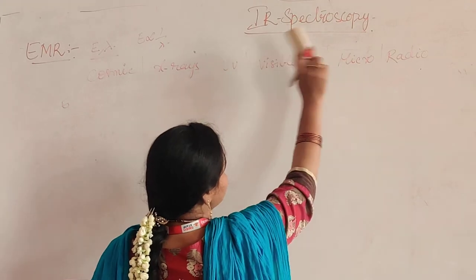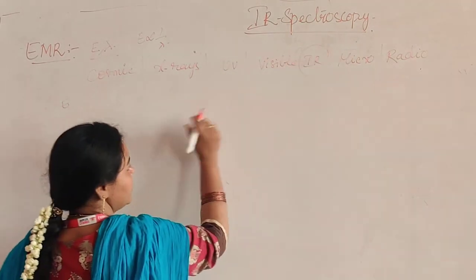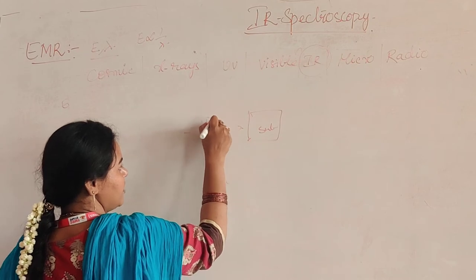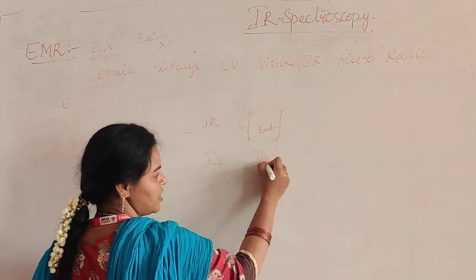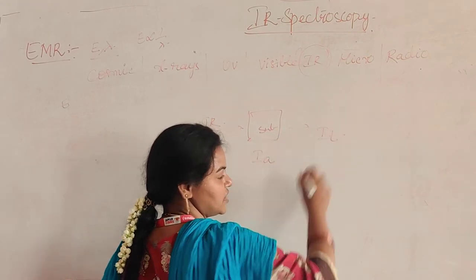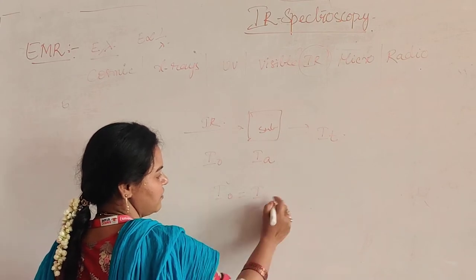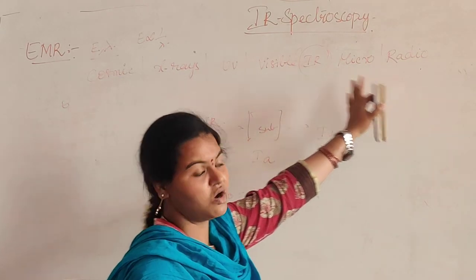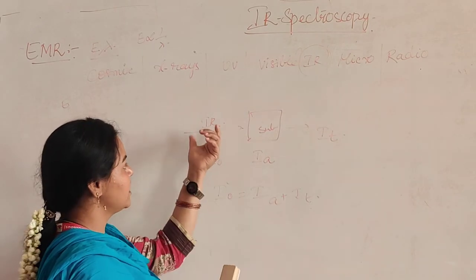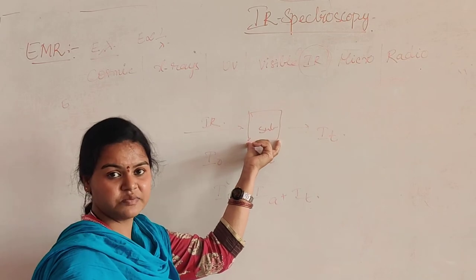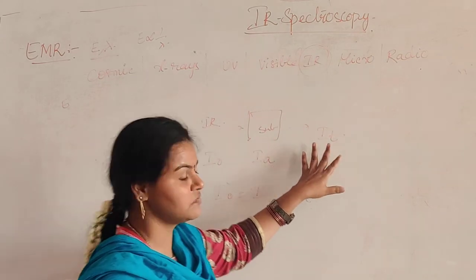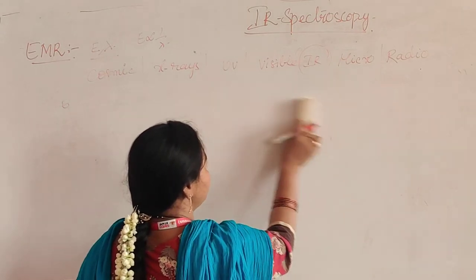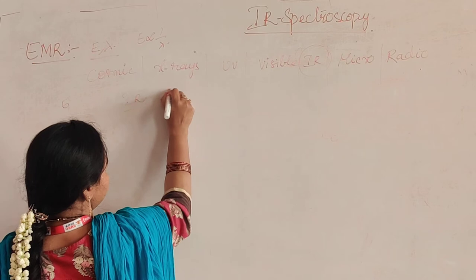Our topic is IR Spectroscopy. When IR radiation falls on a substance, some kind of radiation is absorbed by the substance and the remaining radiation will be transmitted. There is a fundamental relation: I₀ equals I_absorbed plus I_transmitted. This same relation is applicable to any kind of radiation or any kind of spectroscopy. In spectroscopy, when electromagnetic radiation falls on any substance, some is absorbed and the remaining is transmitted out.